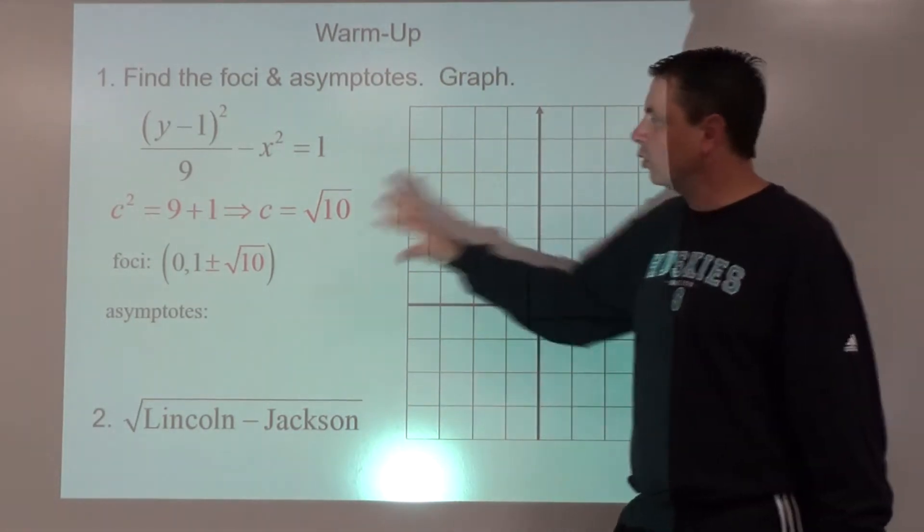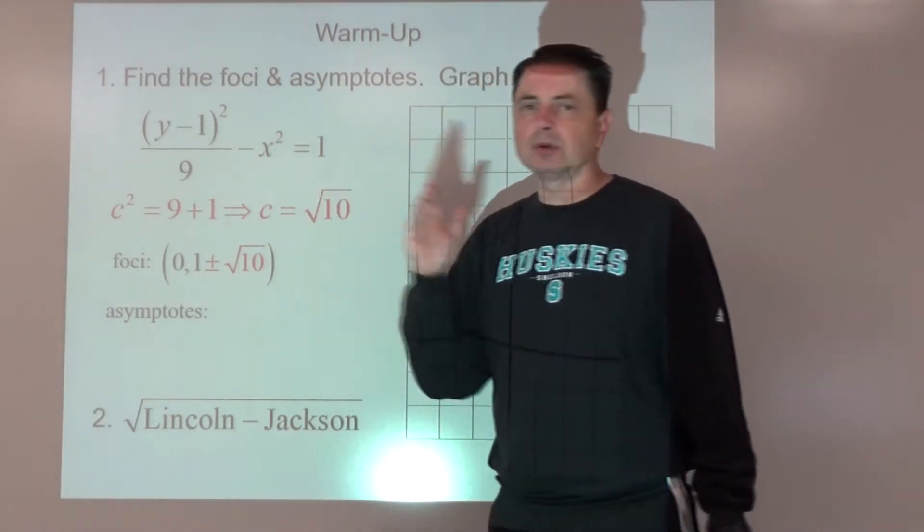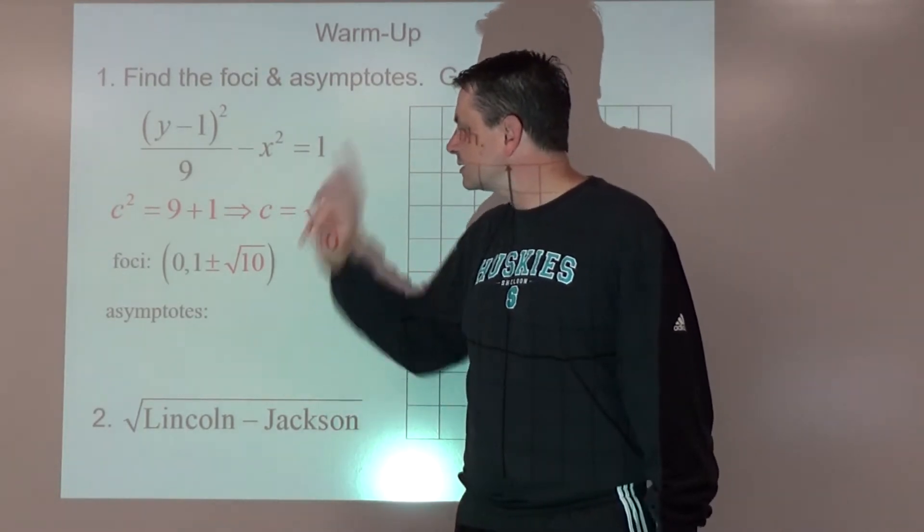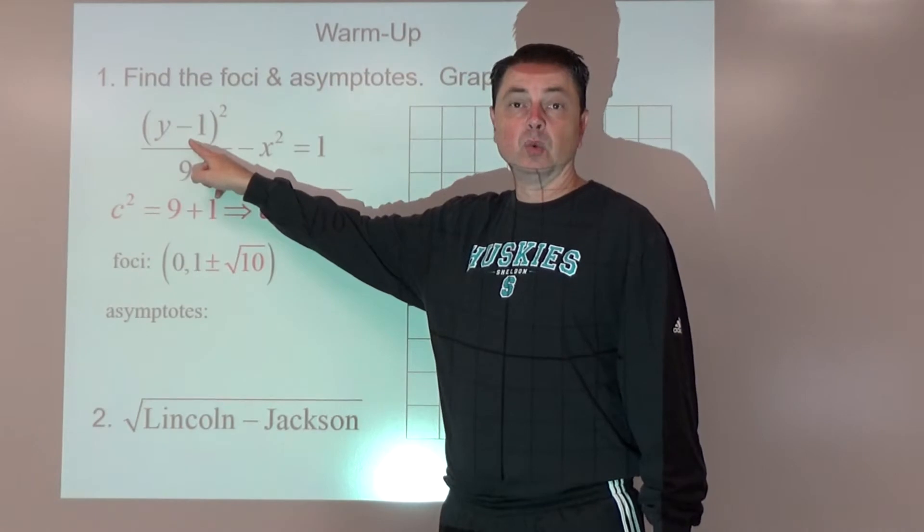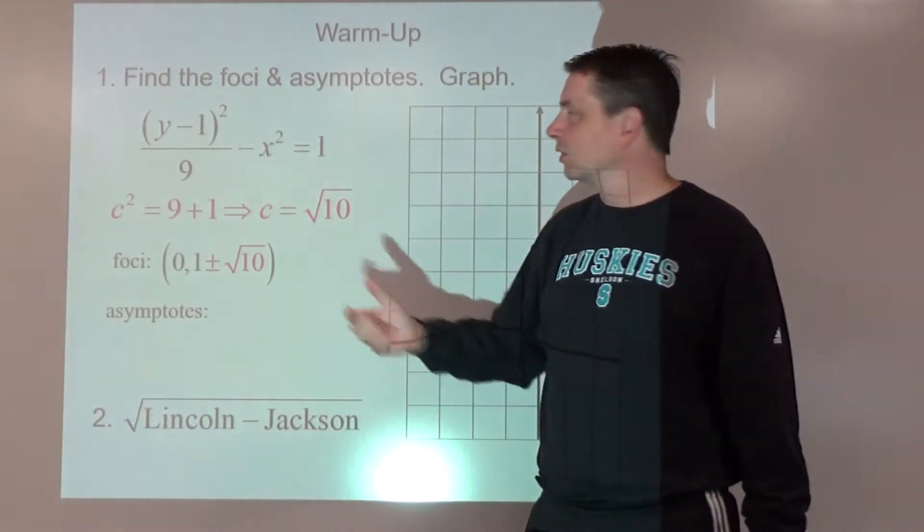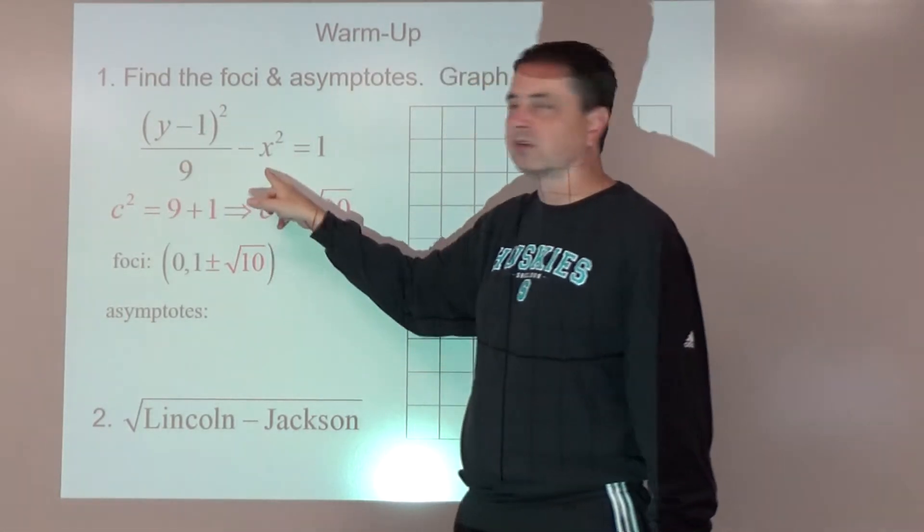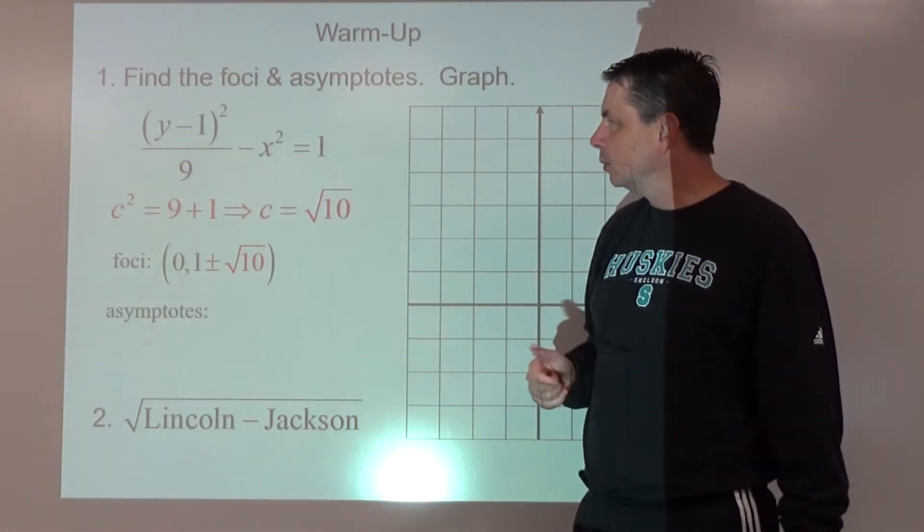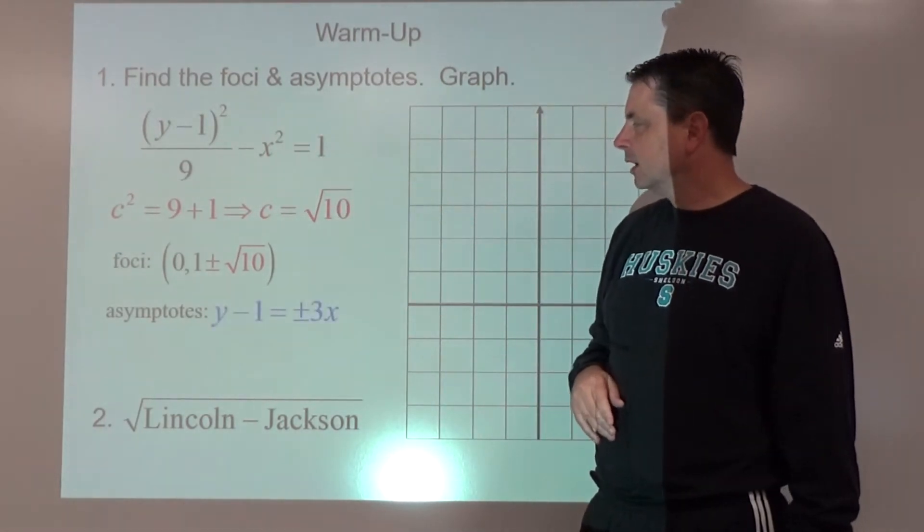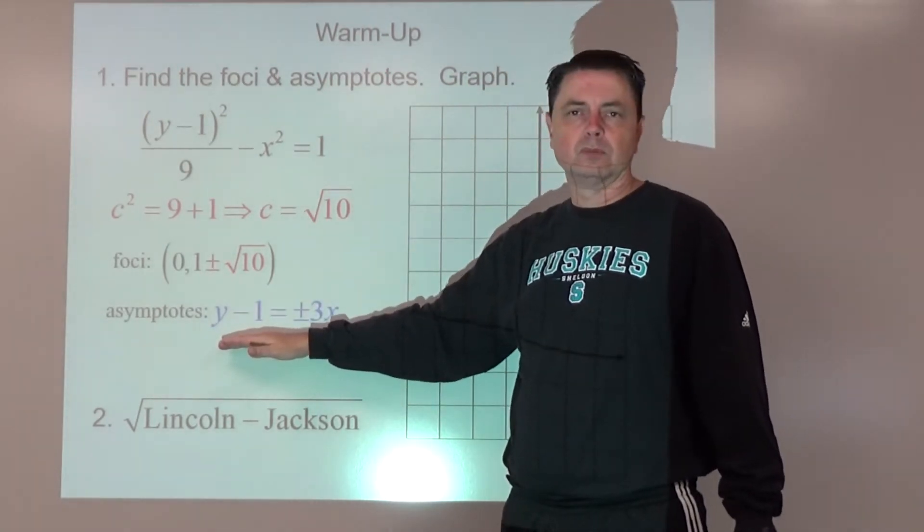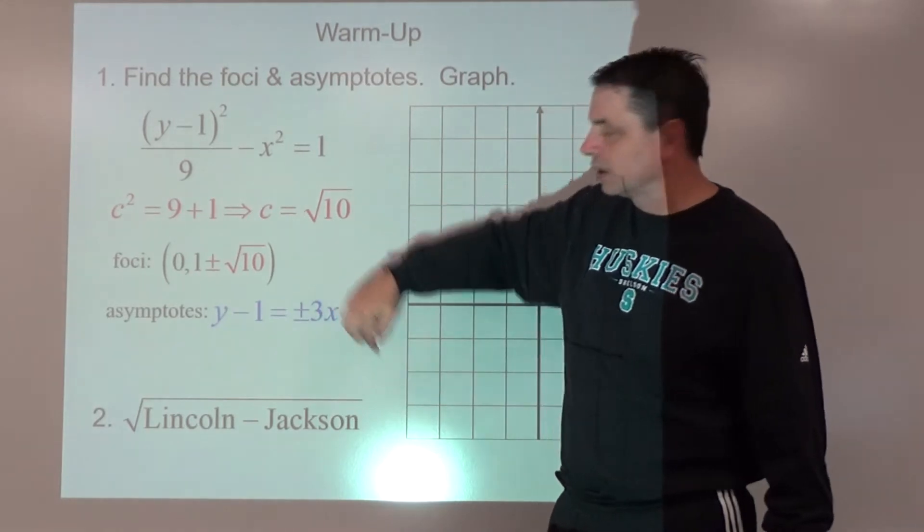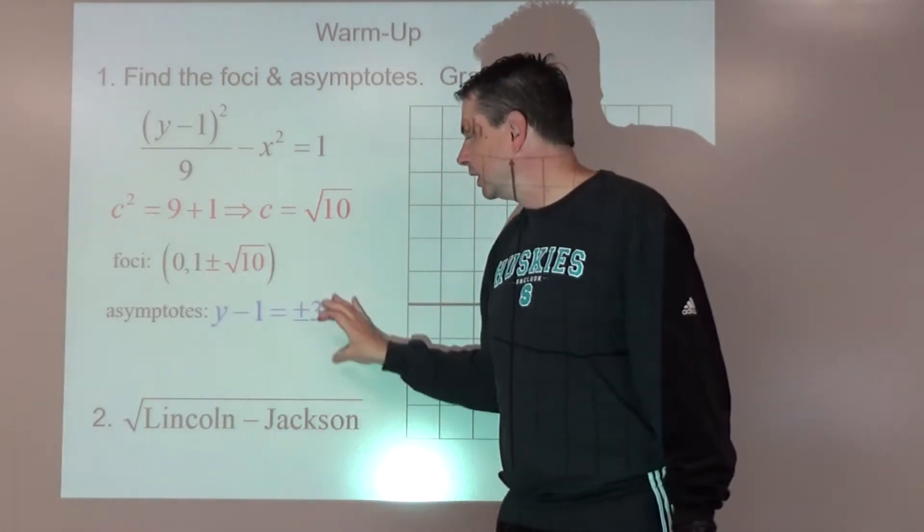Asymptotes, we could get them from the graph, or we could do them now. We're going to go point-slope form: y - 1 = ±, and the slope is going to be the rise over run. Rise comes from under y, so 3/1 is our slope, times x - 0, so we'll just write that as x. WebAssign might want you to add the 1 and make that ±3x + 1. That is slope intercept form, but here we're good.